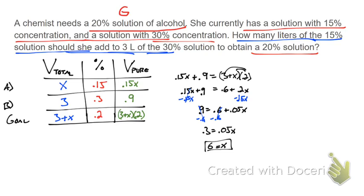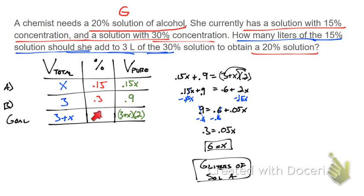So we need to add six liters of solution A — the 15% solution. For a problem like this, set up your table, fill in what you know, and remember the right column equals the first column times the second column. Let's look at another example.